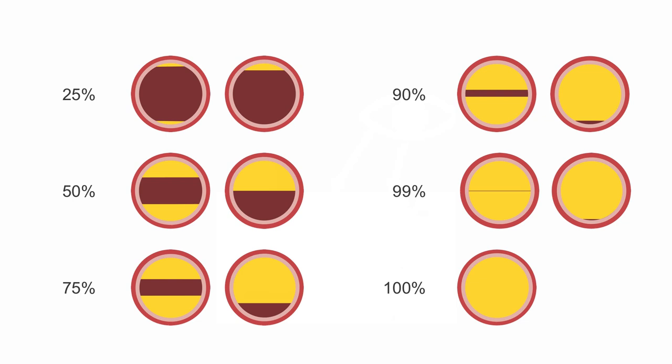0% indicates no apparent stenosis, and 100% a complete occlusion of the vessel. We normally consider less than 25% minimal stenosis, 25-49% mild stenosis, 40-69% moderate stenosis, 70-99% severe stenosis, and 100% an occlusion.